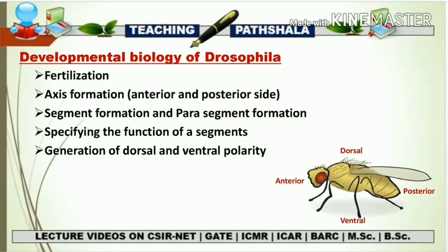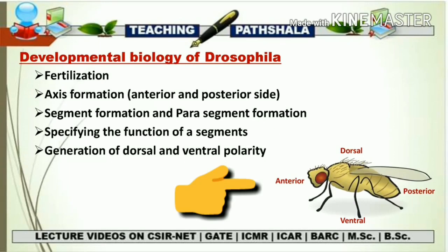So far we have studied the basic concept of Drosophila — its life cycle, why it is a model organism, and how it is used in research. Now the main topic is the developmental biology of Drosophila, covering fertilization, axis formation (anterior and posterior), segment and parasegment formation, specifying the function of each segment, and generation of dorsal-ventral polarity. In the figure, the mouth side is anterior, tail side is posterior, front is ventral, and the back is dorsal — remember these orientations for upcoming content.